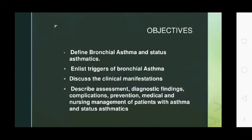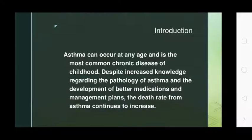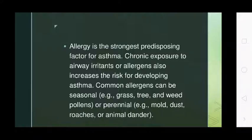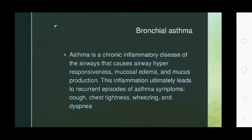Introduction: Asthma can occur at any age and is the most common chronic disease of childhood. Despite increased knowledge regarding the pathology of asthma and the development of medications and management plans, the death rate from asthma continues to increase. Allergy is the strongest predisposing factor. Chronic exposure to airway irritants and allergens also increases the risk. Common allergens can be seasonal — e.g., grass, tree, and weed pollens — or perennial — e.g., mold, dust, and animal dander. Bronchial asthma is a chronic inflammatory disease that causes airway hyperresponsiveness.